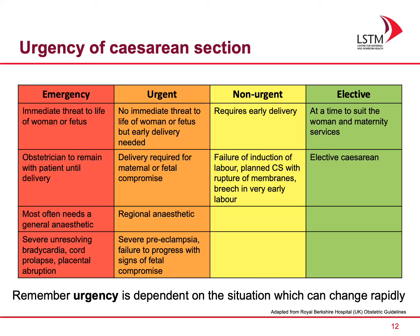A non-urgent caesarean section still requires early delivery. Examples of these kinds of cases are failure of induction of labour, a planned caesarean section where a woman now has ruptured membranes, or a breech in early labour. An elective caesarean section can be performed at a time to suit the woman and the maternity services.